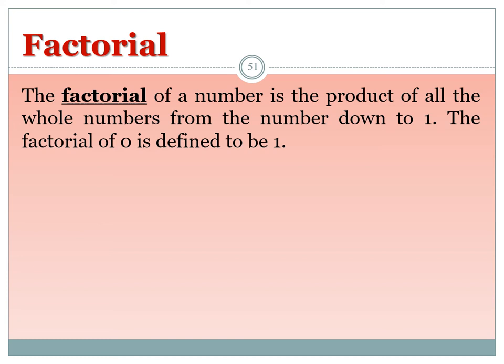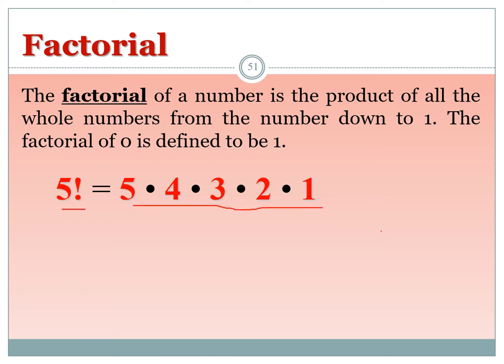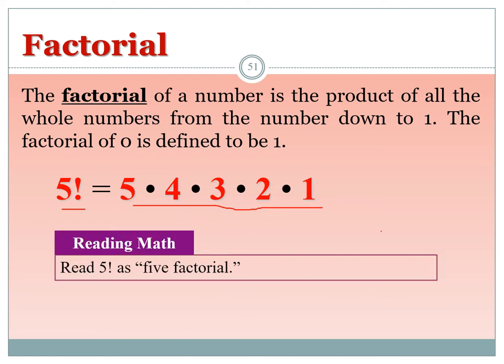Factorial: the factorial of a number is the product of all whole numbers from that number down to 1. By definition, 0! = 1. For example, 5! = 5 × 4 × 3 × 2 × 1, and 10! = 10 × 9 × 8 × ... × 1. This notation is written as n! and read as 'n factorial.'